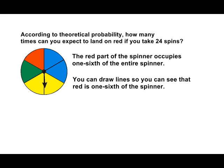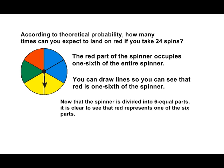If you do this, you will see that each section is exactly one-sixth of the entire spinner. Now that we have divided the spinner into six equal parts, we can see that the red portion of the spinner is exactly one-sixth of the entire spinner.